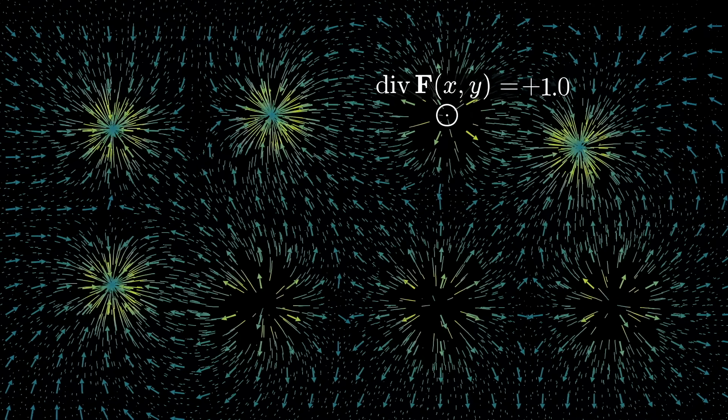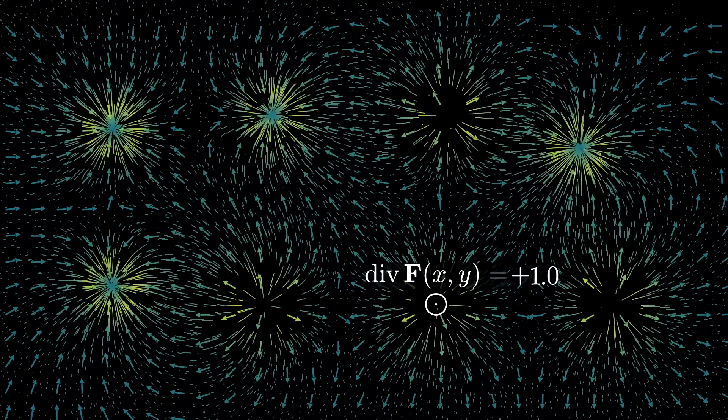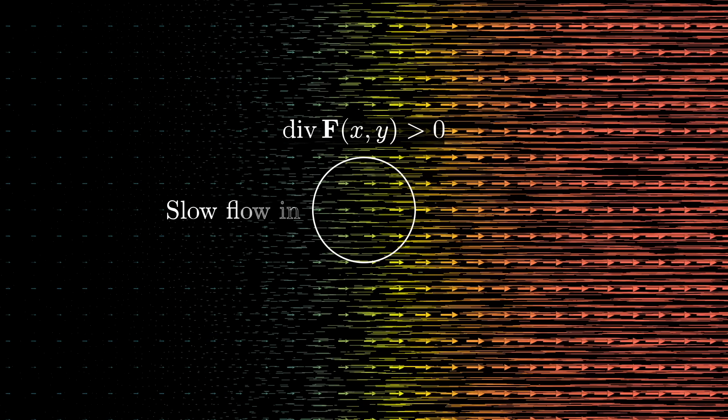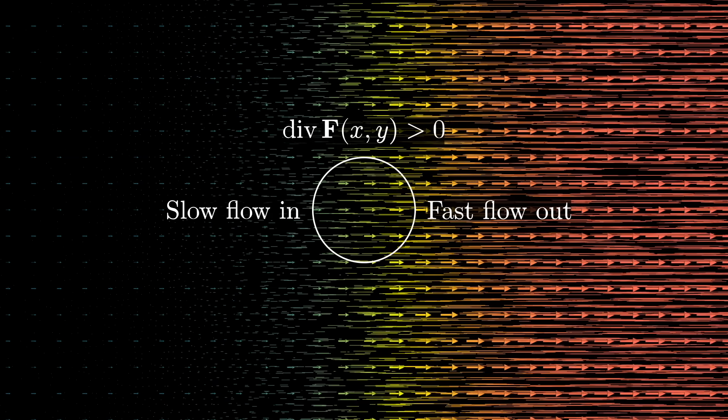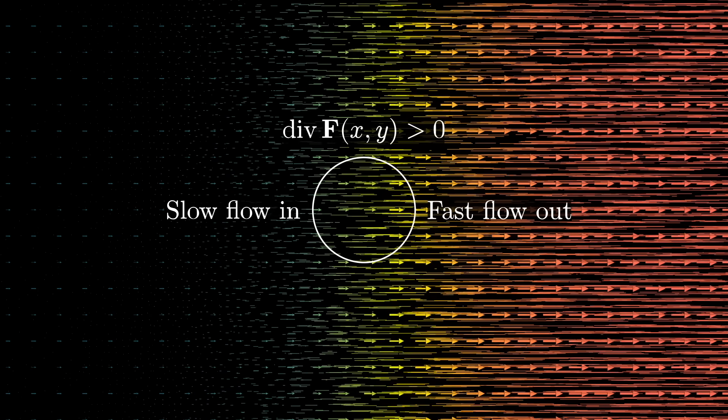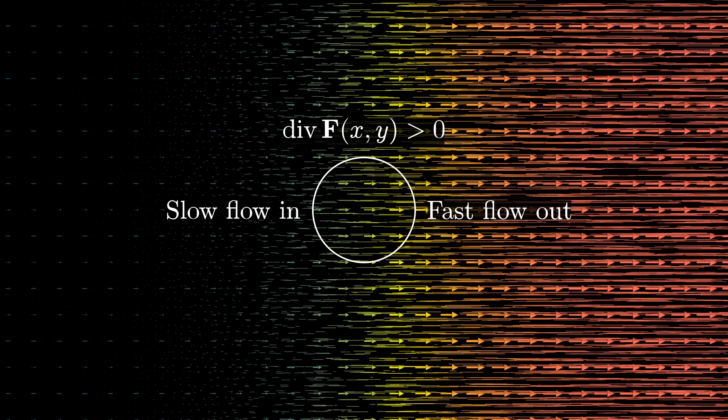And it doesn't just have to be that all of the fluid is flowing away from that point. The divergence would also be positive if it was just that the fluid coming into it from one direction was slower than the flow coming out of it in another direction, since that would still insinuate a certain spontaneous generation.